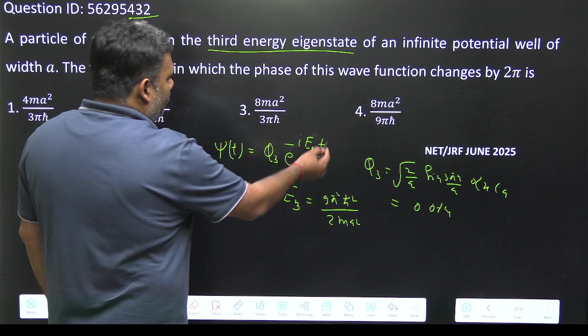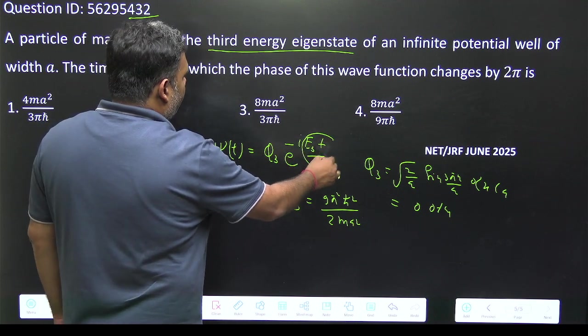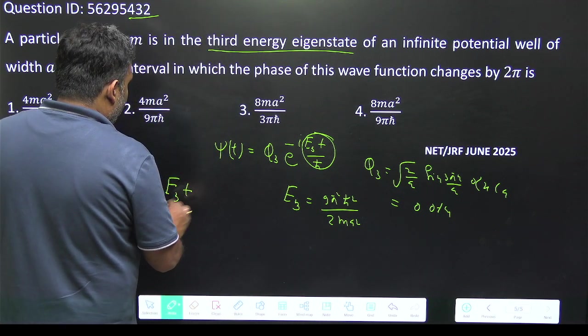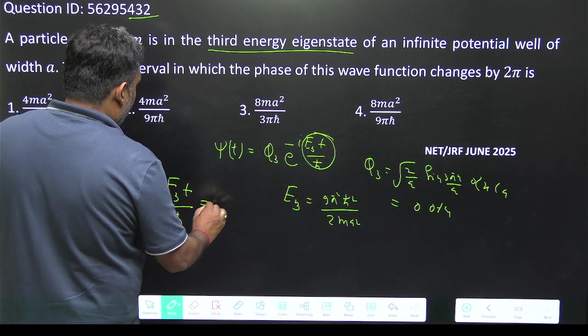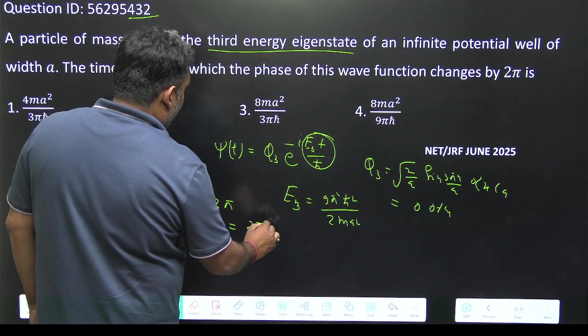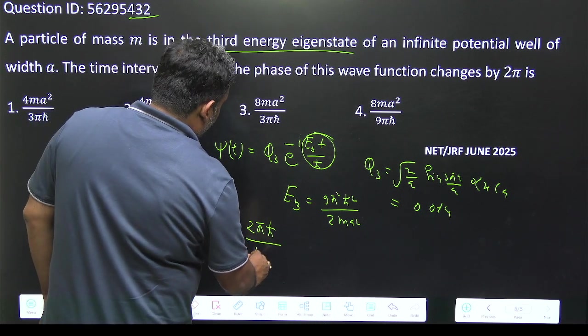It is given that this phase, this is the phase part, this phase is equal to 2π. So it is directly given E₃t/ℏ must be equal to 2π. So the time is equal to 2πℏ/E₃.